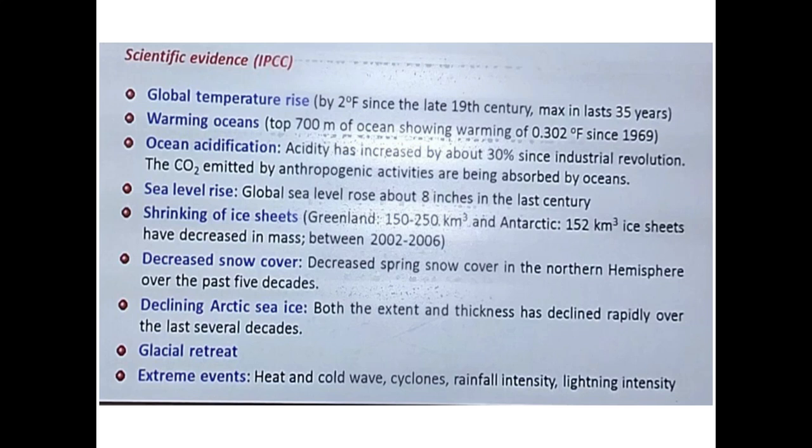To tackle all these climate issues, we need to study climate, atmospheric, oceanic, and terrestrial conditions properly. This requires a large amount of data — approximately the last 50 years — because climate cannot be predicted by observing just a few months or years of data. We need at least 40 to 50 years of data to study climate change properly.